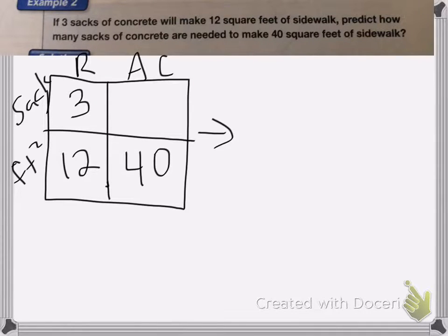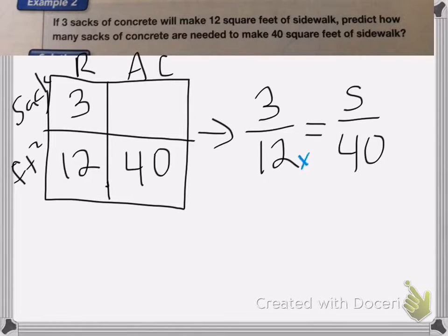Again, we're going to turn this into a proportion. Three over 12 is equal to something. So we're going to put sacks as something over 40. Again, I'm going to cross. In this case, I can't think 12 times what is 40, so I'm going to cross multiply. So I end up with 12s equals 3 times 40.